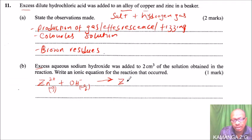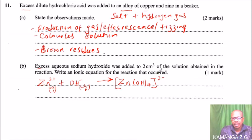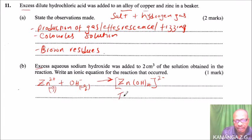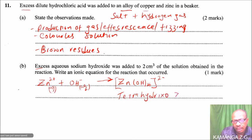The complex ion formula is [Zn(OH)₄]²⁻, which has a two-negative charge. This is known as the tetrahydroxozincate(II) ion.